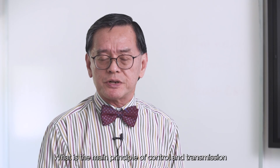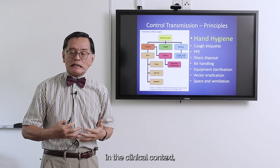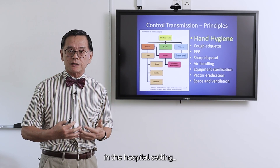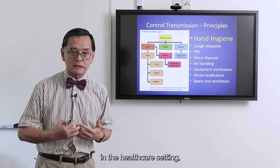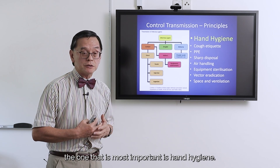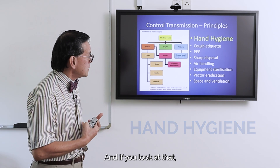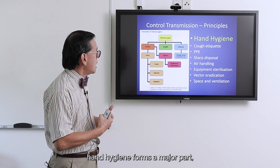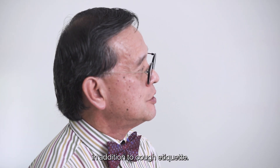What is the main principle of control transmission in the clinical context, in the hospital setting, in the healthcare setting? The one that is most important is hand hygiene. Hand hygiene forms a major part, in addition to cough etiquette.